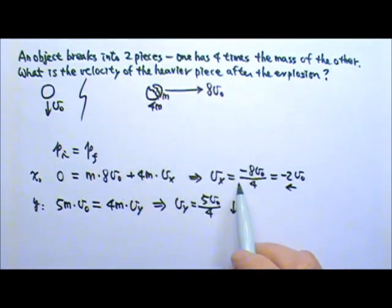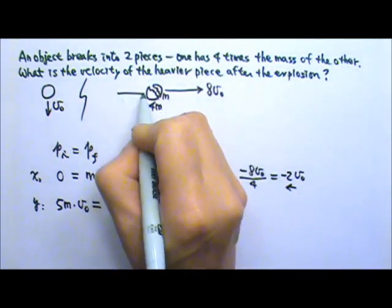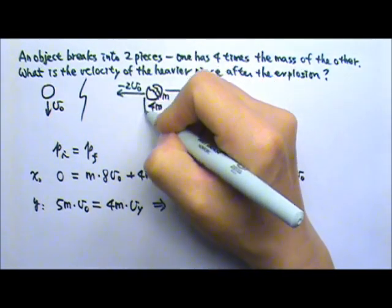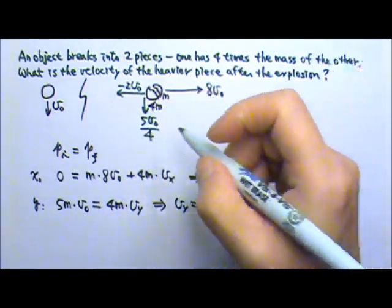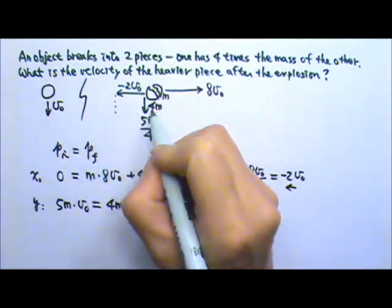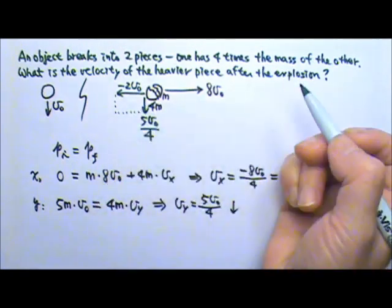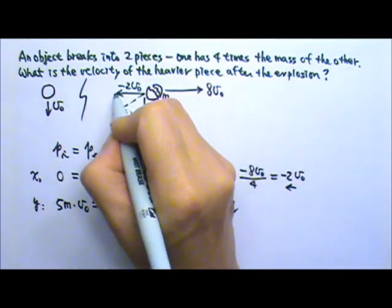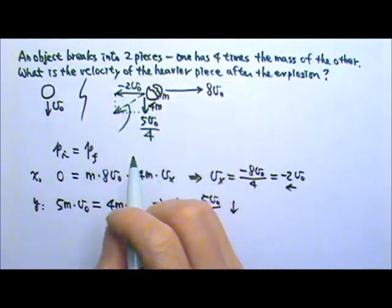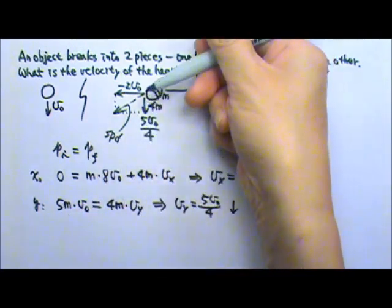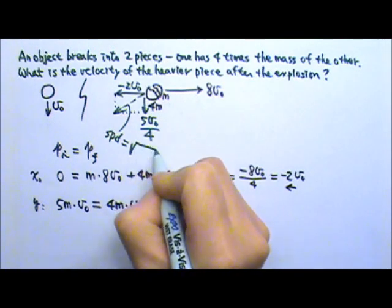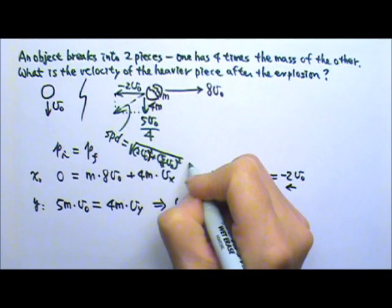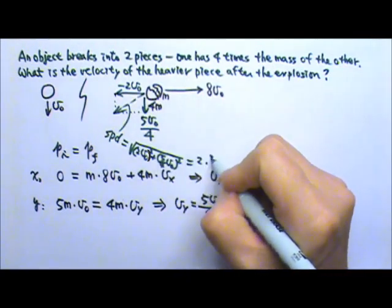So the 4m's final velocity has two components: the x-direction component goes to the left, that is negative 2V0, and the y-component goes downward, that is 5V0 over 4. To find the total velocity, I can add these two components together using a rectangle — the diagonal is the resultant. The magnitude, which is the speed, can be found using the Pythagorean theorem: it's the square root of (2V0)² plus (5/4 · V0)², which gives about 2.36V0.